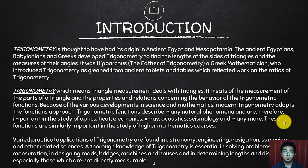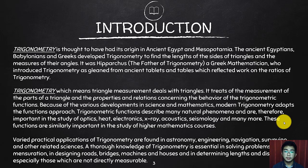Trigonometry is thought to have had its origin in ancient Egypt and Mesopotamia. The ancient Egyptians, Babylonians, and Greeks developed trigonometry to find the lengths of the sides of triangles and the measures of their angles. It was Hipparchos, the father of trigonometry, a Greek mathematician who introduced trigonometry from ancient tablets and tables which reflected work on the ratios of trigonometry.